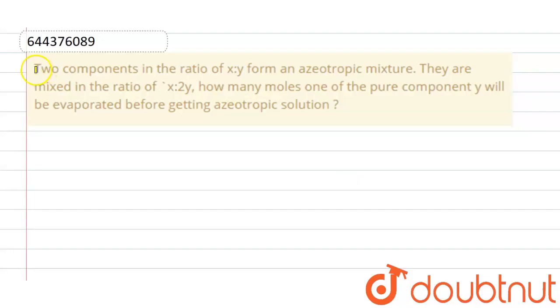Our question is: two components in the ratio of x:y form an azeotropic mixture. They are mixed in the ratio of x:2y. How many moles of the pure component y will be evaporated before getting azeotropic solution? Firstly, what is azeotropic solution and azeotropic mixture?